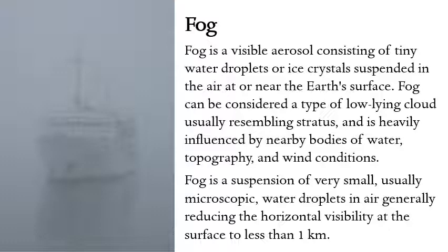Fog is a visible aerosol consisting of tiny water droplets or ice crystals suspended in the air at or near the earth's surface. It can be considered a type of low-lying cloud, resembling stratus clouds. As we know, stratus clouds are low-level clouds that can be suspended from the earth's surface up to about 200 meters. So fog is a type of cloud resembling stratus clouds.